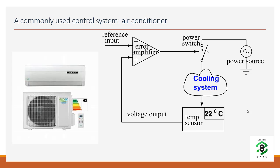You turn on the cooling system and let's say you start with an ambient temperature of 40 degrees and room temperature is 40 degrees. The cooling system is on, it keeps blowing cold air and the temperature keeps dropping. Let's say you have set the temperature at 22 degrees. The temperature sensor tracks it and continuously gives the voltage output. The moment it goes below 22 degrees centigrade, the error amplifier makes a decision: it should not keep the cooling on anymore because the desired temperature has been reached.